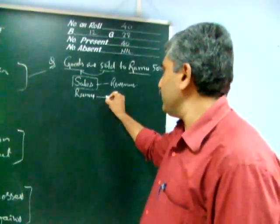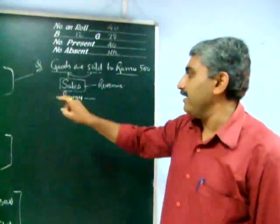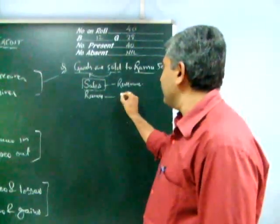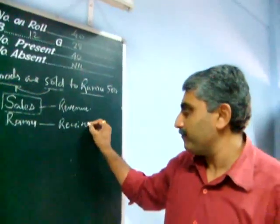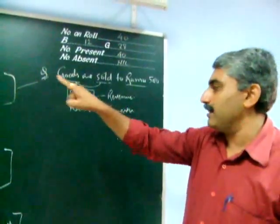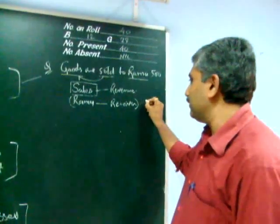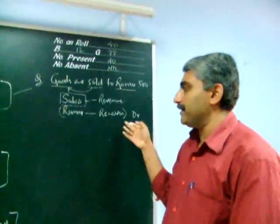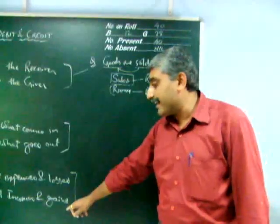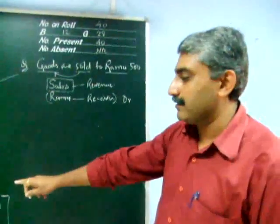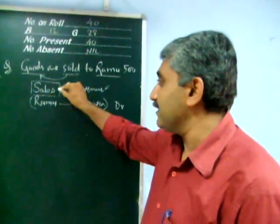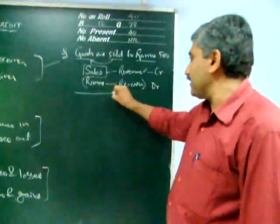Sales is a revenue or income, so it belongs to nominal account. Ramu is a person, so he belongs to personal account. Since Ramu is the receiver of goods, we apply the personal account rule: debit the receiver. So Ramu's account is to be debited. For the other aspect, sales is income and belongs to nominal account, and the nominal account rule says credit all incomes and gains, so sales is to be credited.